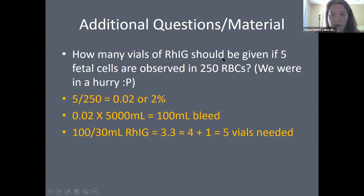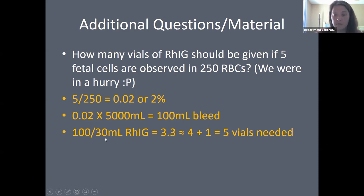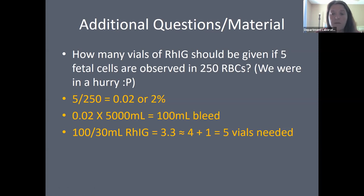In this example: 5 fetal cells divided by 250 gives 2%, or 0.02 in decimal form. 0.02 times 5,000 equals a 100 mL bleed. Divided by 30 mL gives 3.3, which rounds up to 4. Adding the required additional vial gives a total of 4 vials of RhoGAM.